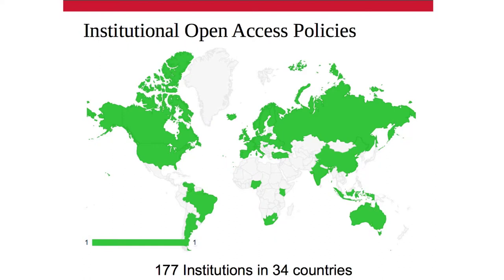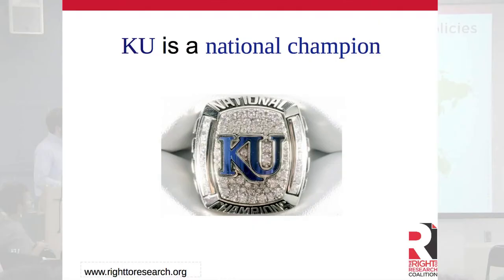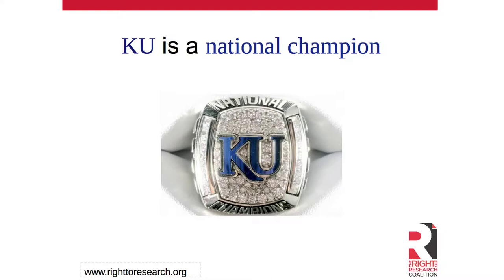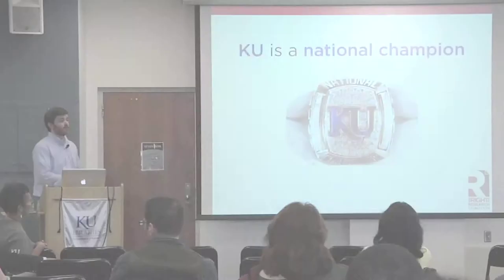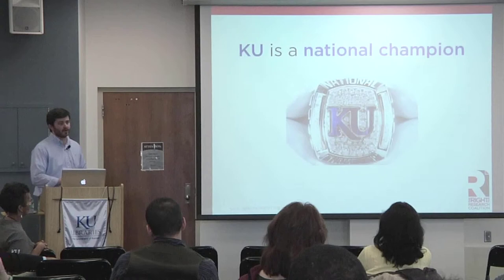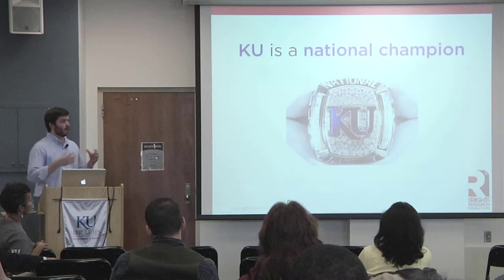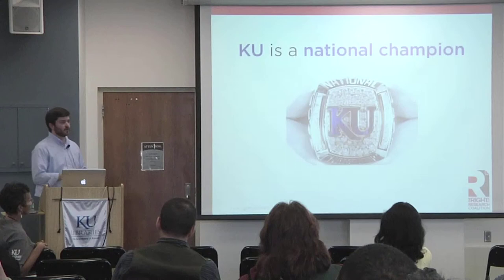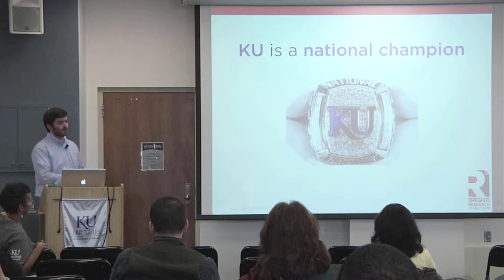Today there are actually over 180 institutional policies in 34 countries all around the world, so we are slowly but surely filling in this map. KU is definitely a national champion on institutional open access policies, being the first public institution in the US to have such a policy. KU is also the leader of the Coalition of Open Access Policy Institutions, an advocacy group where universities with these policies come together to talk about their experiences and also lobby at the federal level for national open access policies. Dean Herakim is very much involved in leading that organization.